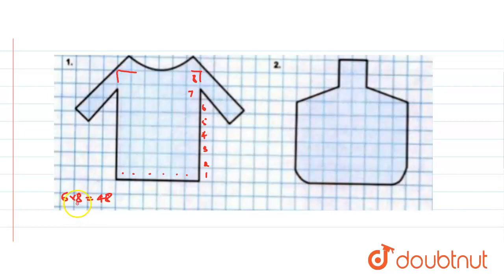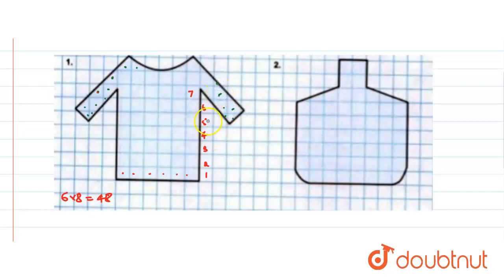Now we calculate the partial squares by adding one partial square with another to make a perfect square. This one and this one become 1; this one and this one become 2; this one and this one become 3; these two become 4; these two become 5; these two become 6; these two become 7; these two become 8; these two become 9; these two become 10; and these remaining become 11. So total 11 partial squares are there.